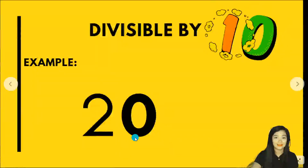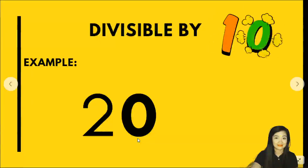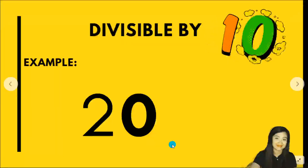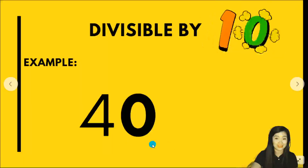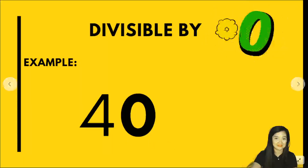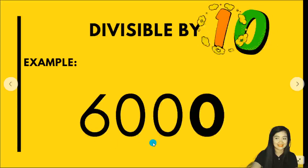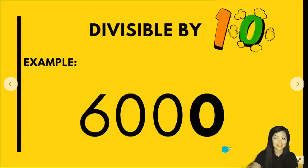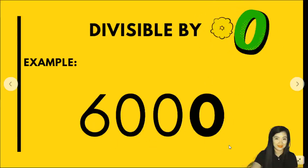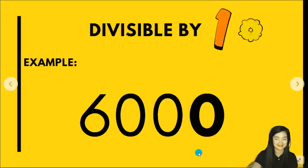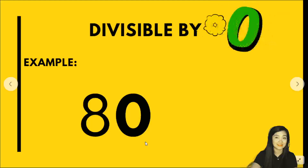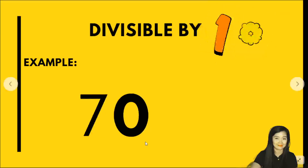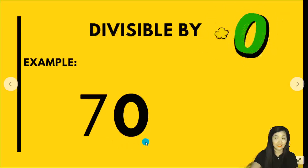20 — the 1's digit of 20 is 0. Therefore, it is divisible by 10. Same goes with 40; the 1's digit is 0. Therefore, it is divisible by 10. Next is 6,000 — the 1's digit is 0. Therefore, it is divisible by 10. 80 — the 1's digit is 0. Therefore, it is divisible by 10. 70 — the 1's digit is 0. Therefore, it is divisible by 10.